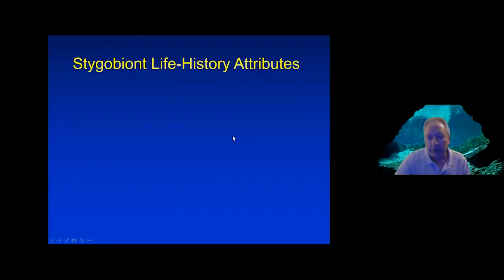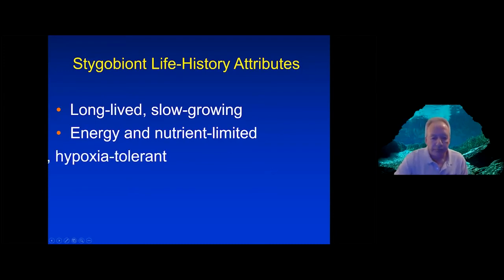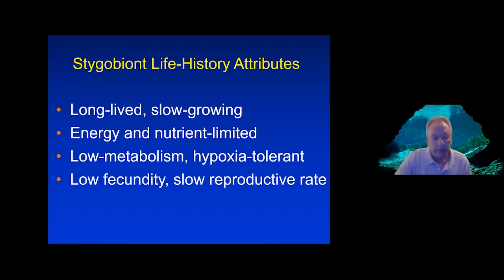Stygobionts have very interesting life history attributes: they are very long-lived and slow-growing, living in energy- and nutrient-limited environments. They generally have low metabolic rates, are tolerant of low dissolved oxygen, and have relatively low fecundity and slow reproductive rates — essentially living in a state of suspended animation compared to their epigean or surface-dwelling ancestors.